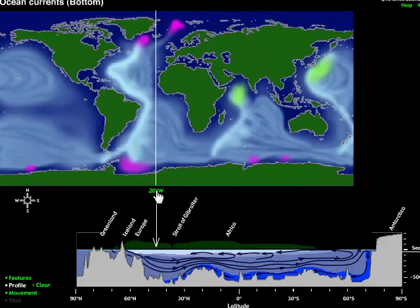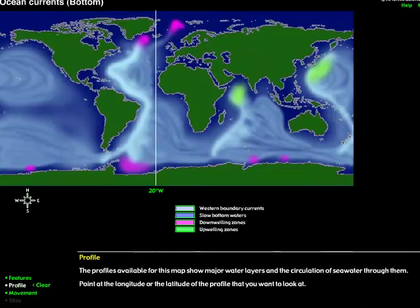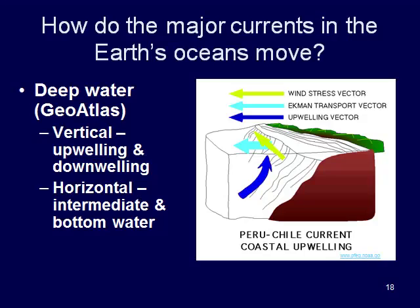Why are surface and bottom waters moving in different directions? At the surface, winds dominate the direction, and at the bottom of the ocean it's mostly density driven — two different scenarios. That's deep water: upwelling, downwelling, and then horizontal movement of intermediate and bottom water.